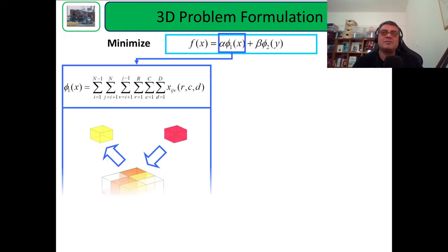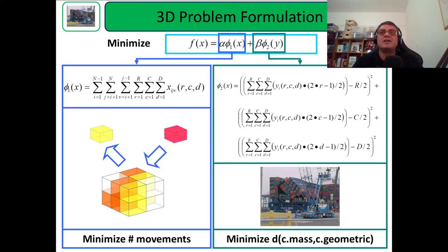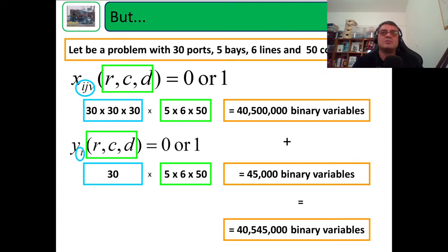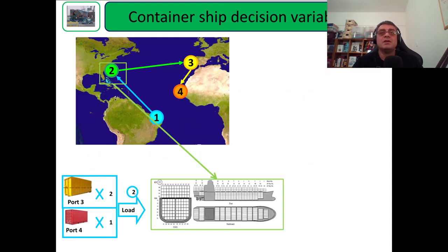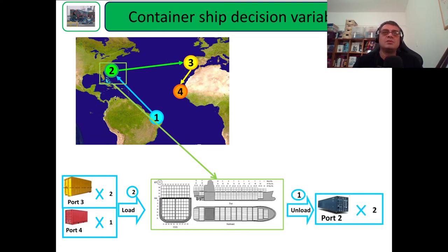Okay, no more math. This mathematical part will be avoided. Now imagine that your ship is traveling through ports, and imagine that we are in port two. We have to load some containers in port two, and also we have to unload some containers which destination is port two.